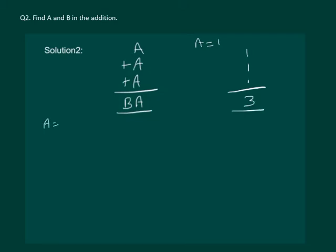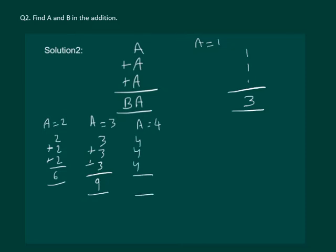For A equal to 2 we will get 2 plus 2 plus 2 that is 6, again not a 2 digit number. A equal to 3 will give 3 plus 3 plus 3, 9, again a single digit number. A equal to 4 will give 4 plus 4 plus 4 that is equal to 12.